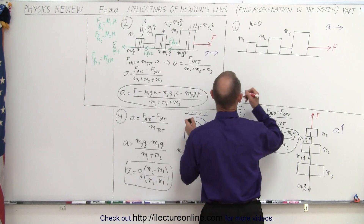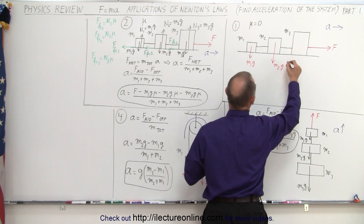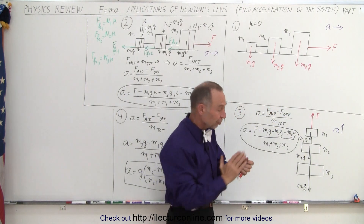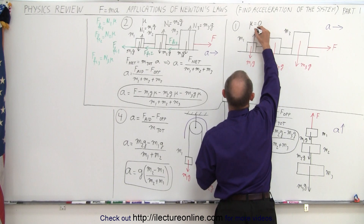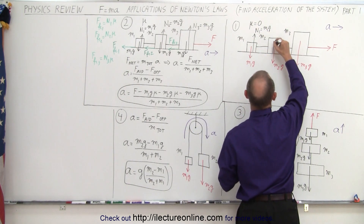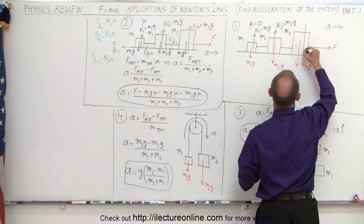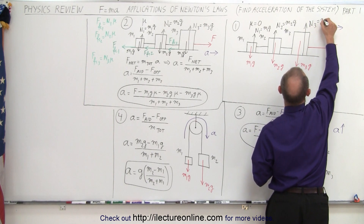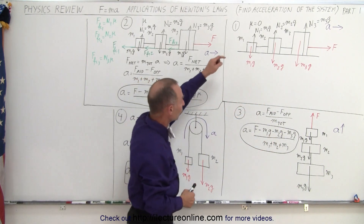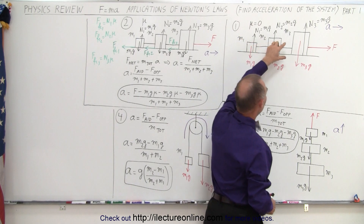So we have gravity acting on each mass: M1g pointing downward, M2g pointing down, and M3g pointing down. And then we have the normal forces — the surface pushing back in the opposite direction. N1 equals M1g, N2 equals M2g, and N3 equals M3g. These are three pairs of forces — a force down and a force up — equal in magnitude and opposite in direction, so they cancel each other out.